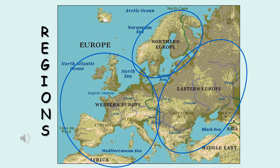Europe is divided into three major regions: northern Europe, where Scandinavia is located; western Europe, where you have the Iberian Peninsula and the Italian Peninsula; and eastern Europe.